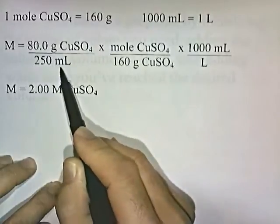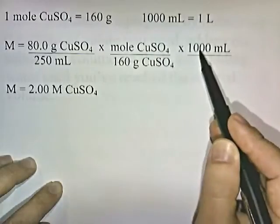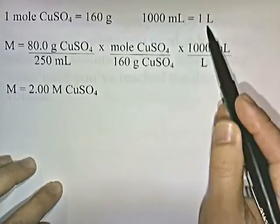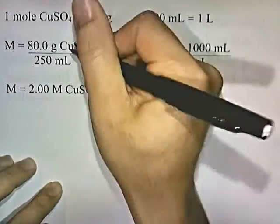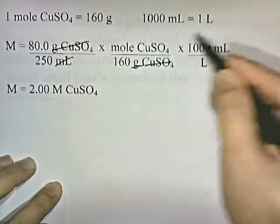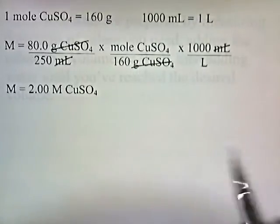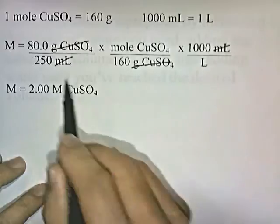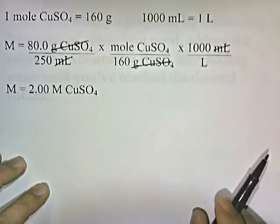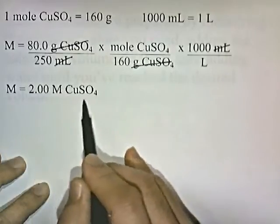We have 250 milliliters on the bottom and want to convert that into liters. Since milliliters is on the bottom, we put 1,000 milliliters on top and one liter on the bottom, because 1,000 milliliters equals one liter. Set up this way, grams of copper sulfate cancel leaving moles, and milliliters cancel leaving liters — giving us moles per liter, the definition of molarity. So 80 times 1,000 divided by 160 times 250 gives us 2 molar CuSO₄, meaning one liter of solution contains 2 moles of CuSO₄.